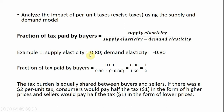In example one, the supply elasticity is 0.8 and the demand elasticity is minus 0.8. Neither side of the market is more or less elastic than the other. Substituting these results into our formula, we see that the fraction of tax paid by buyers is one-half.